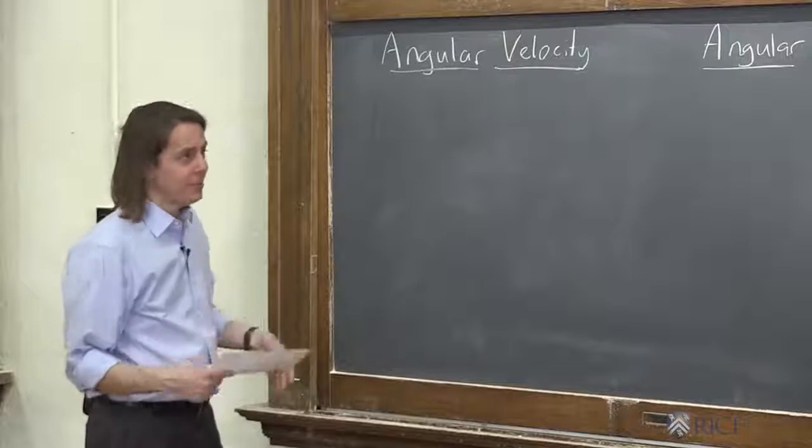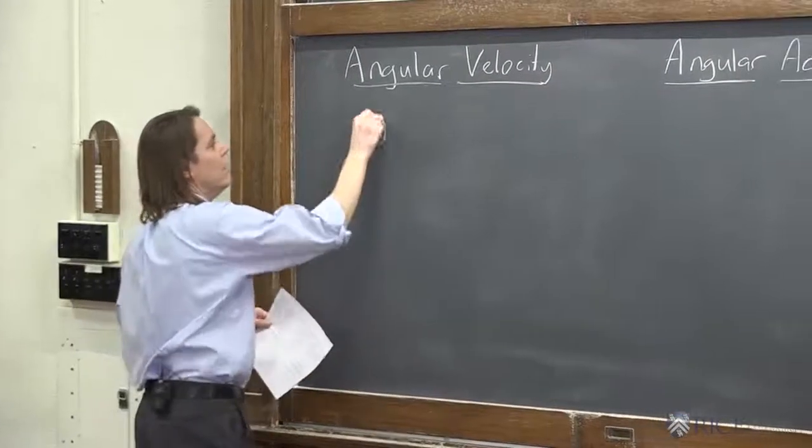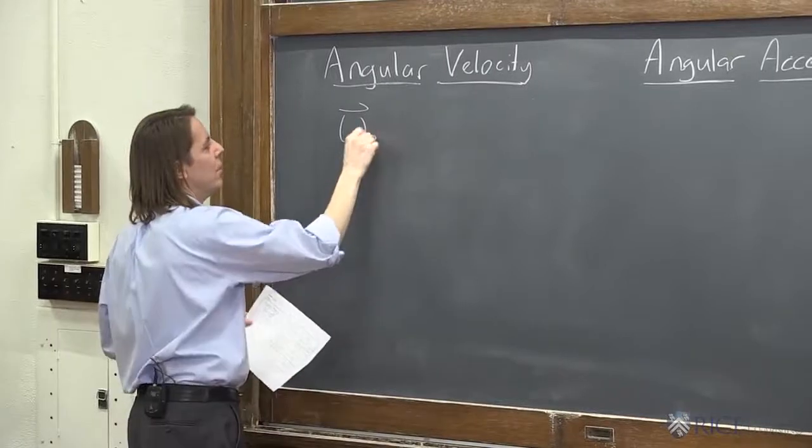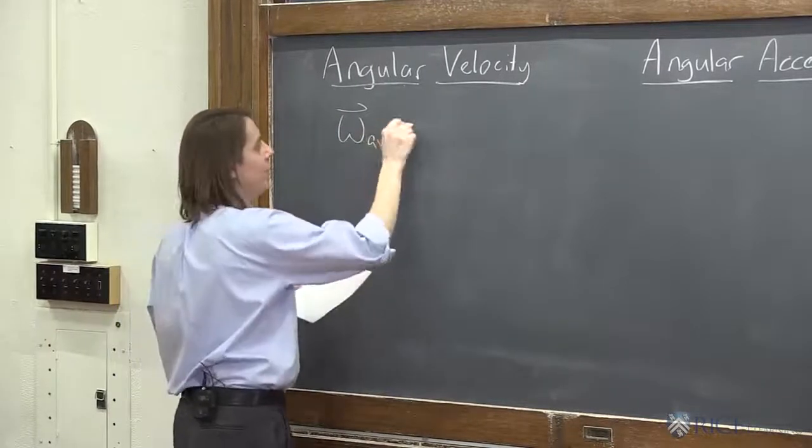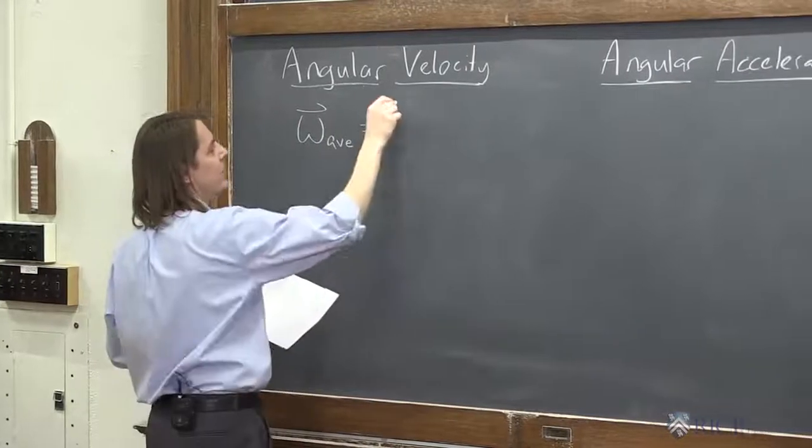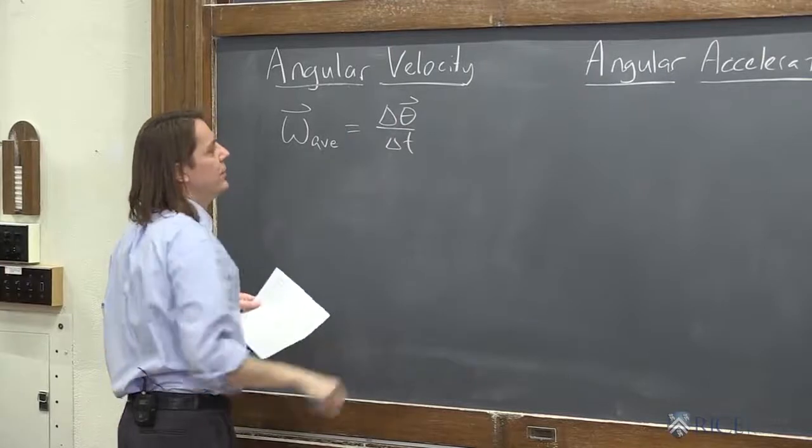Angular velocity. What was the definition before? It was the displacement over delta t. Same thing now. Omega is the symbol for angular velocity. It is a vector because the angular displacement is a vector. They're all vectors. So delta theta over delta t.